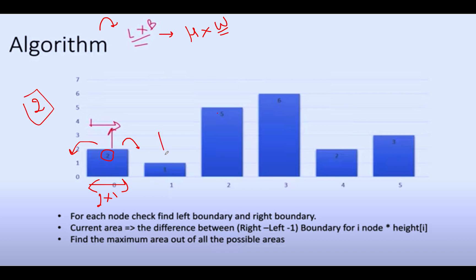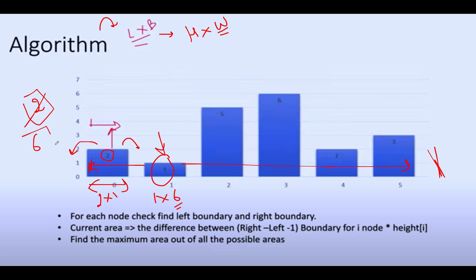Next, height is 1 unit. Let's check how far this height can stretch. It stretches all the way across 6 pillars — both to the right and to the left. So the area corresponding to this height is 1 × 6 = 6. Since 6 is greater than the previously calculated answer of 2, the answer gets updated to 6.